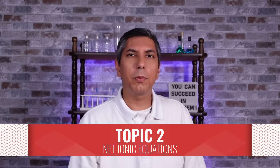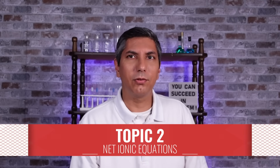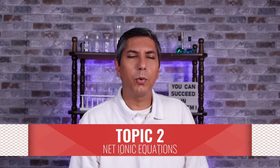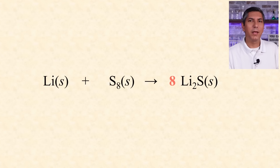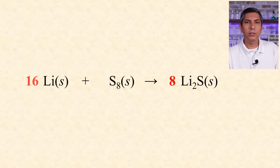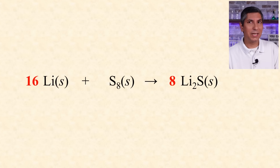Chemical equations are used to represent reactions. When writing a chemical equation, always balance it. Balancing an equation shows we conserve mass and atoms in every chemical process. Be able to balance equations.